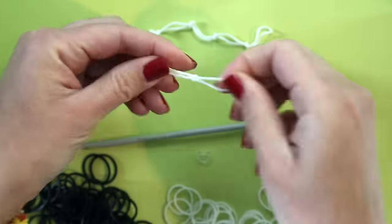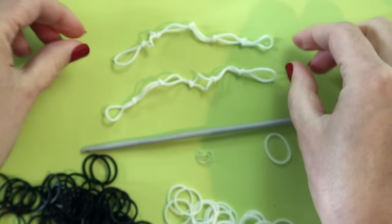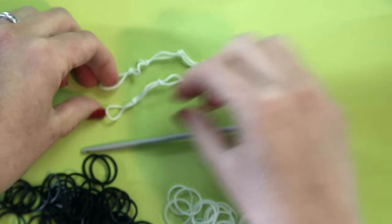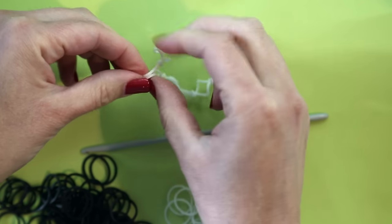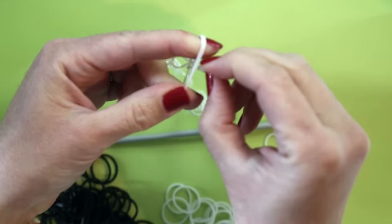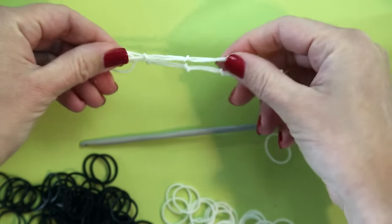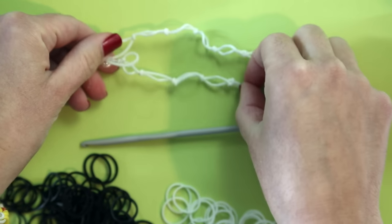Once you have your two strands for your web created you want to take one end, stretch it and place the c-clip across and we're going to keep the other two sides open so that we can attach the spiders.